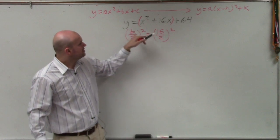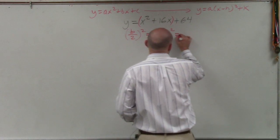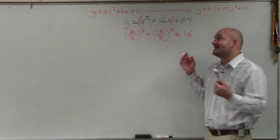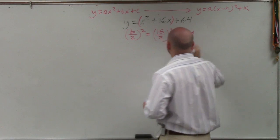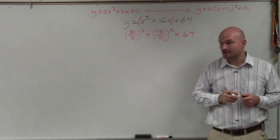So it's b divided by 2 squared, and that gives you 64. Because 16 divided by 2 is 8, and 8 squared is 64. Would everybody agree with me? Good.